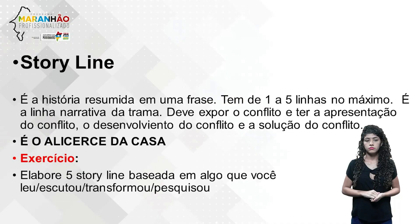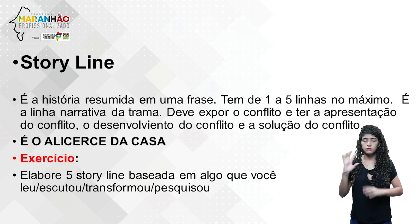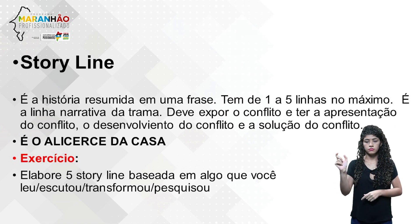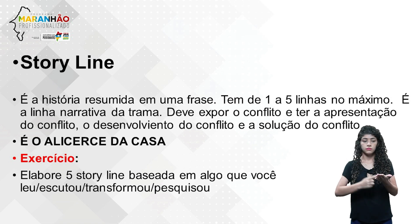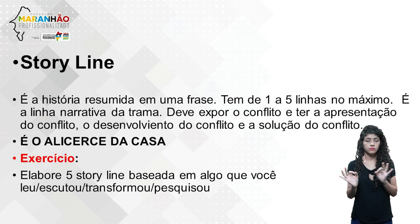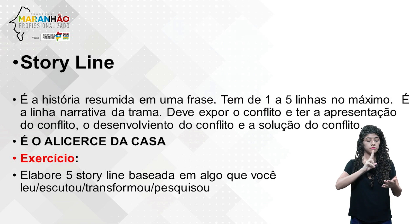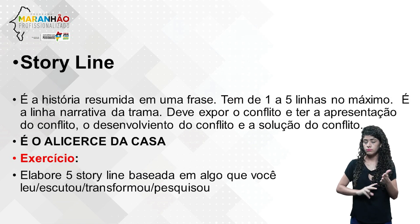A segunda etapa do roteiro é a storyline: a história resumida em apenas uma frase, com uma a cinco linhas no máximo. É a linha narrativa da trama. Deve expor o conflito, com a apresentação, o desenvolvimento e a solução do conflito. É algo bem resumido que você conta para o seu produtor antes que ele leia o argumento. A storyline é o alicerce da casa.